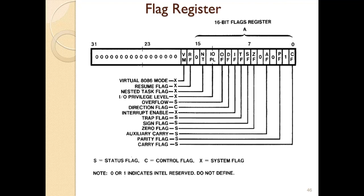There are four privilege levels, so IOPL is the privilege level flag. The nested task flag and resume flag — whenever a resume from any instruction or routine is needed, the resume flag is used. The virtual 386 mode flag: this bit is set whenever the 386 enters virtual mode. S indicates status flags, C indicates control flags, and X indicates system flags.